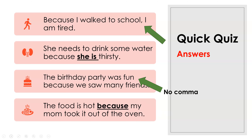Third: 'The birthday party was fun because we saw many friends.' That one is correct — no comma needed. Fourth: 'The food is hot because my mom took it out of the oven.' The original said 'why my mom,' which is the wrong word. When you're explaining a reason, use 'because,' not 'why.'